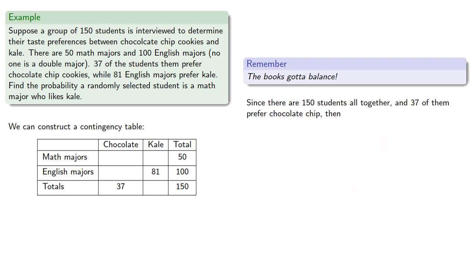Now since there are 150 students all together, and 37 of them prefer chocolate chip, then the book's got a balance. That means that 150 minus 37, or 113, prefer kale.